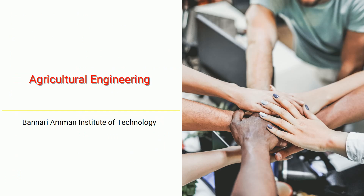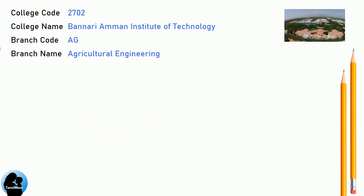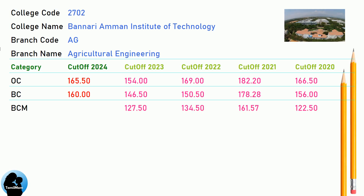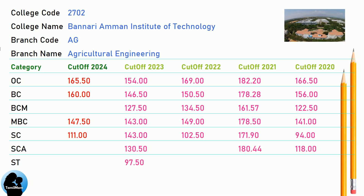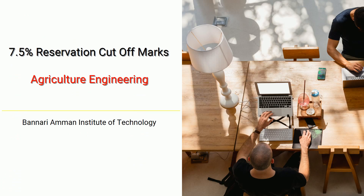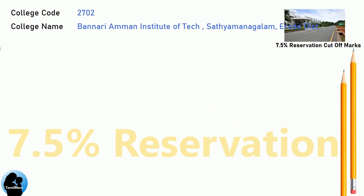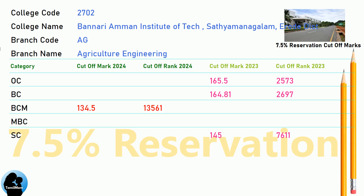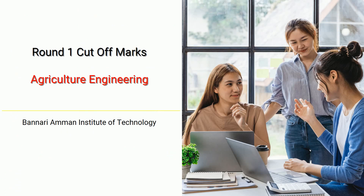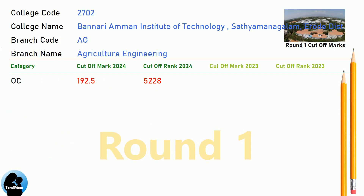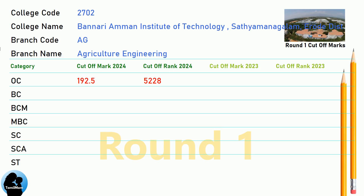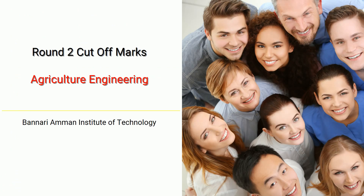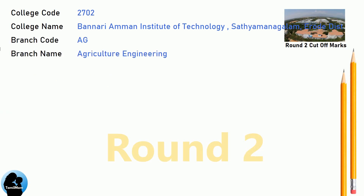DNA Cut-Off for Banari Amman Institute of Technology in Agricultural Engineering. DNA 7.5 Reservation Cut-Off, Round 1 Cut-Off, and Round 2 Cut-Off for Banari Amman Institute of Technology in Agricultural Engineering.